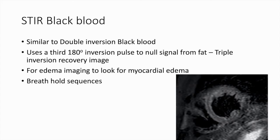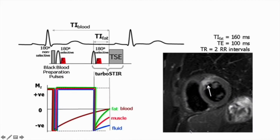The STIR black blood image is similar to the double inversion black blood image but uses a third 180-degree inversion pulse to null signal from fat — hence a triple inversion recovery image. It is used for edema imaging to look for myocardial edema and is a breath-hold sequence. This is a triple inversion recovery sequence where signal from both blood and fat is nulled, showing significant myocardial edema in the anterior segment.